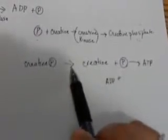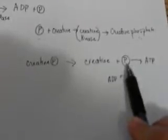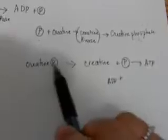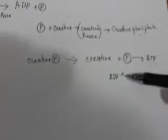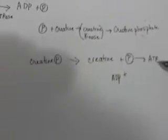We break it down into creatine and the phosphate. The stored energy found in creatine phosphate, we're going to break it down. Now we have this free phosphate group that can bind with ADP to form ATP.